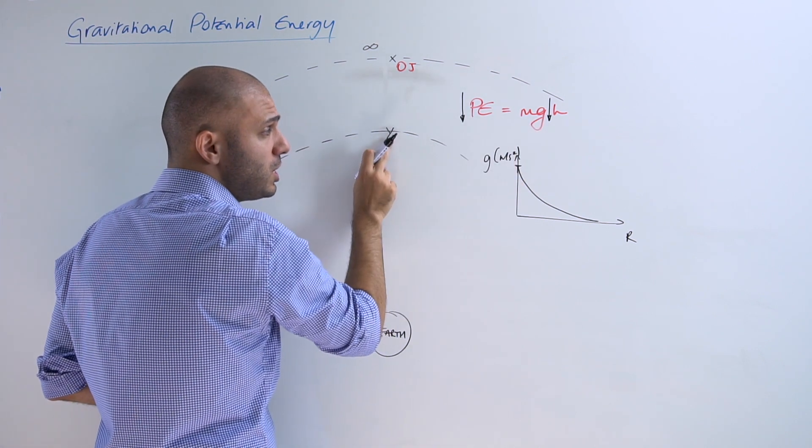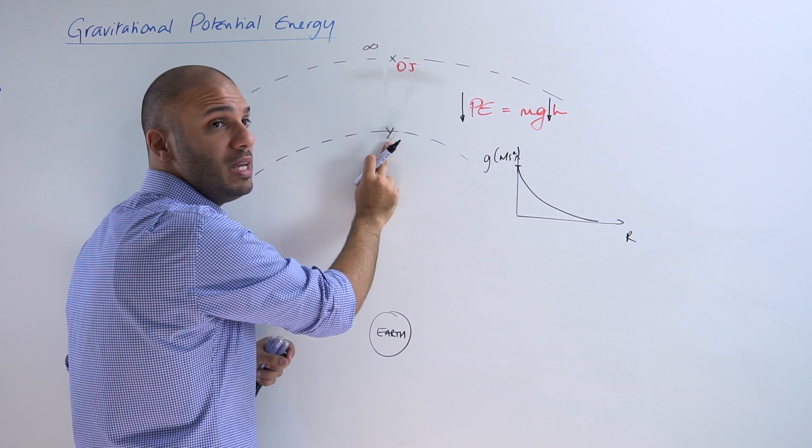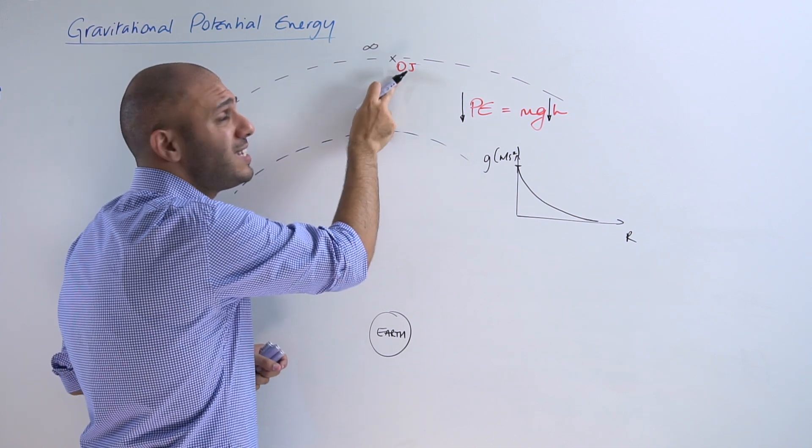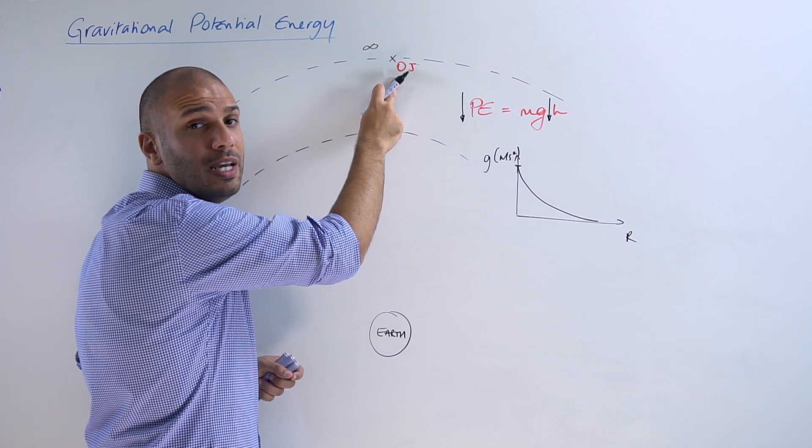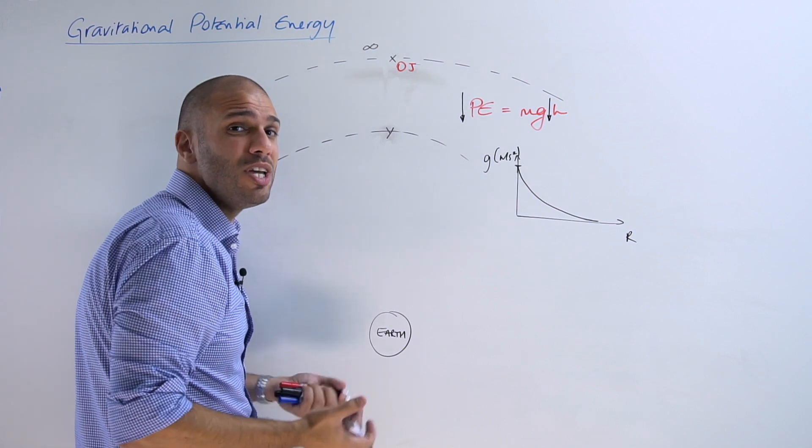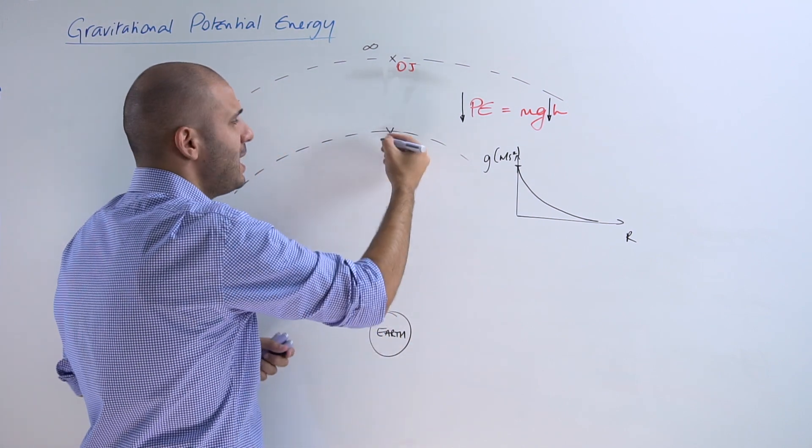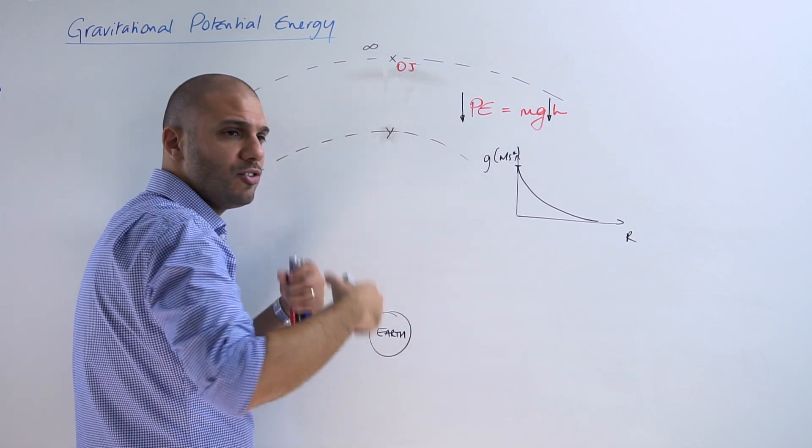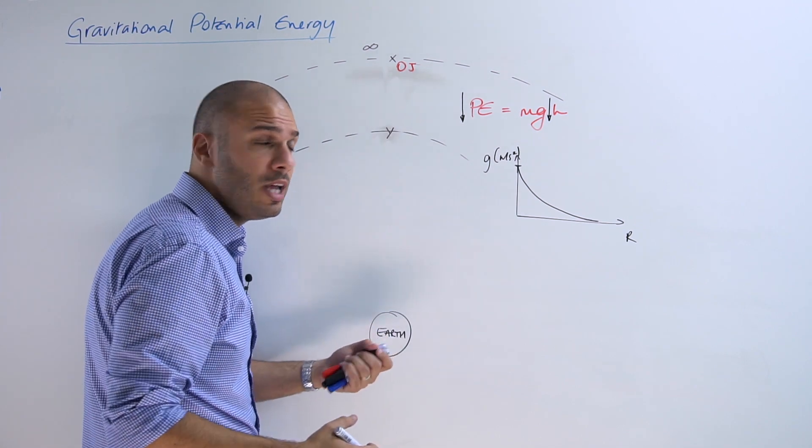Then its potential energy at Y will be less. And what is less than zero joules? It must be a value which is negative. So it might be negative 100, negative 200, negative 300, whatever, but the value for potential energy will now be a negative value.